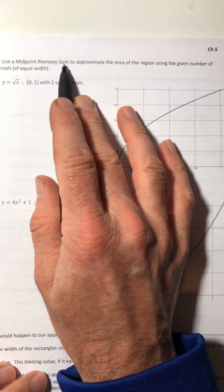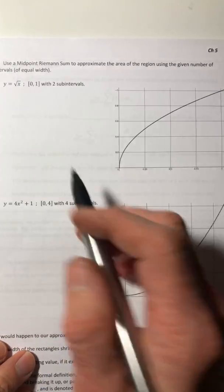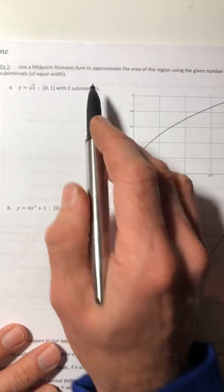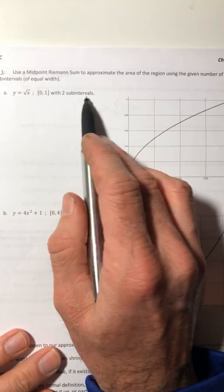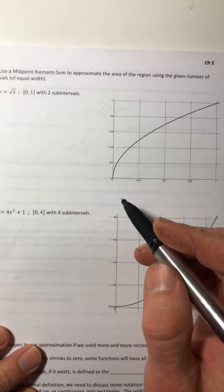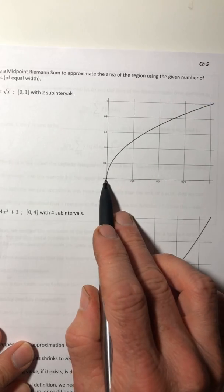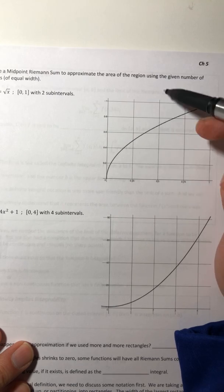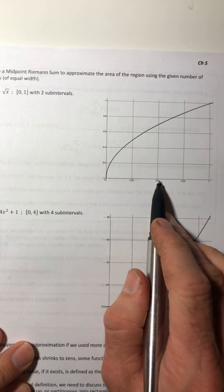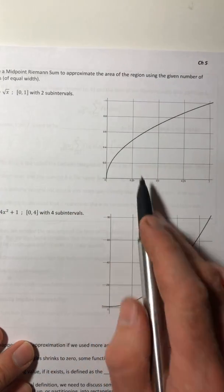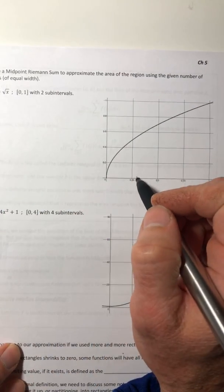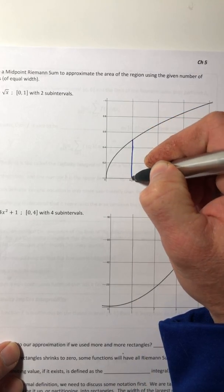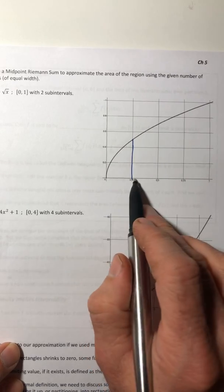Okay, so use our midpoint Riemann sum to approximate the area. So part A, y equals root x from zero to one with two subintervals. So again, we're going to make the rectangles of equal width. So if I'm going from zero to one, I'm splitting it right here. So each of those rectangles has a width of a half, but it's a midpoint. So I want the height to be generated right in the middle. So this right here has got to be the height of the first rectangle because it's in the middle.